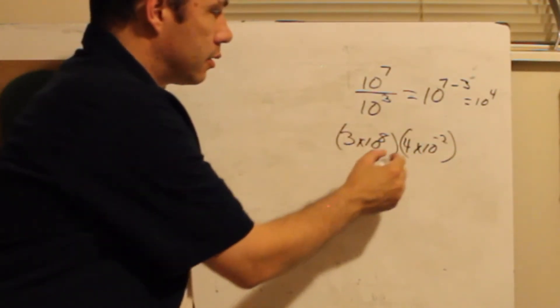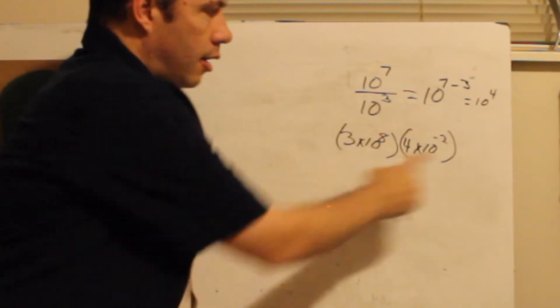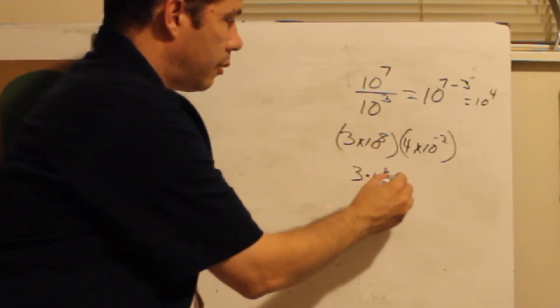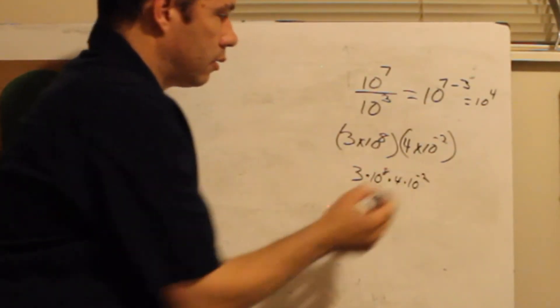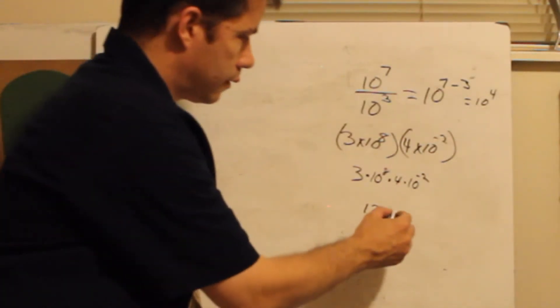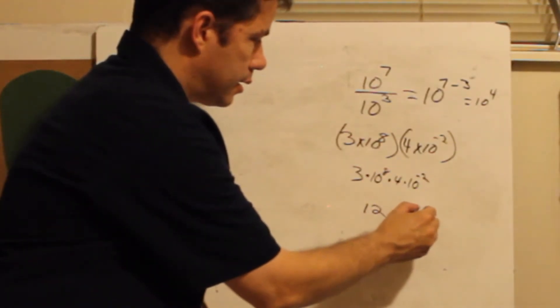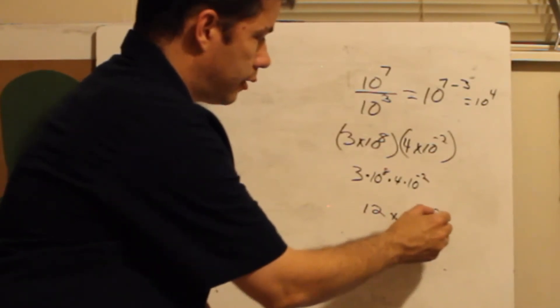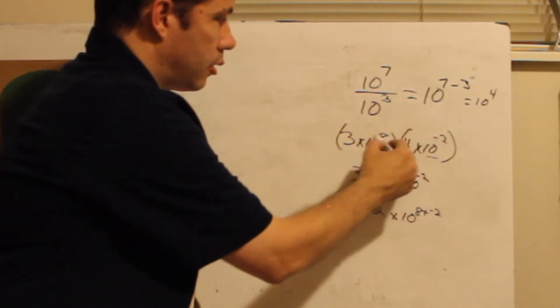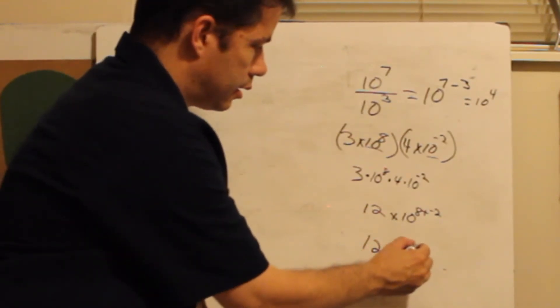So 3 times 4 is, so notice what I'm doing. 3 times 10 times 4 times 10, this is all multiplying, so I could really write it 3 times 10 to the 8th times 4 times 10 to the negative 2. So now I'm just going to go 4 times 3 which is 12. Then I'm going to do my exponents times 10, they're multiplying so 8 plus negative 2. See how I'm taking my exponents, this one and this one, they're multiplying so I'm going to add them, so I'm going to get 12 times 10 to the 6th power.